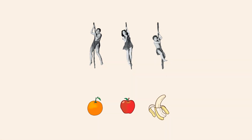One possible relation between these people and fruit would be that certain people in set A like certain fruit in set B. For instance, let's say that Tarzan likes oranges, Boy likes apples and bananas, and Jane likes oranges, apples, and bananas. Instead of drawing multiple arrows from a single person, we could represent this relation by a collection of individual arrows, each connecting one person to one fruit.